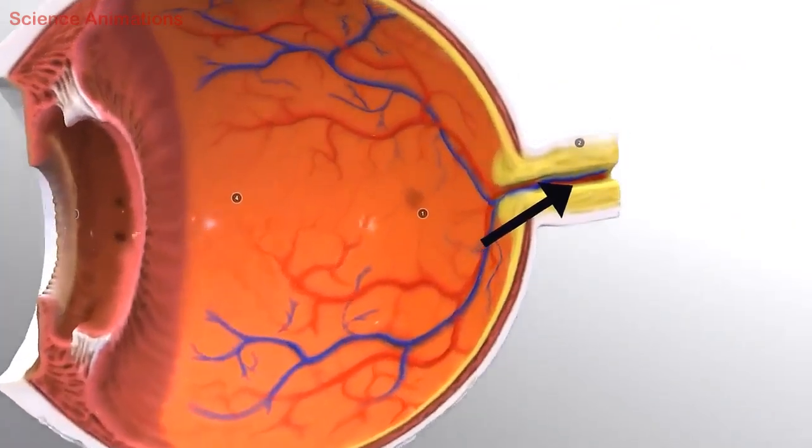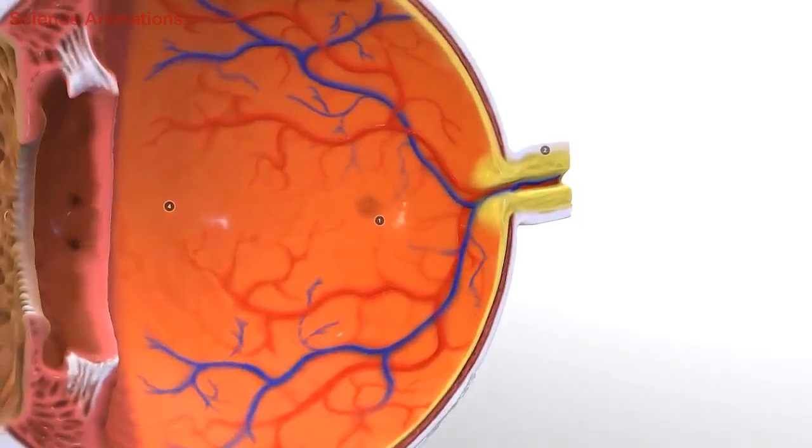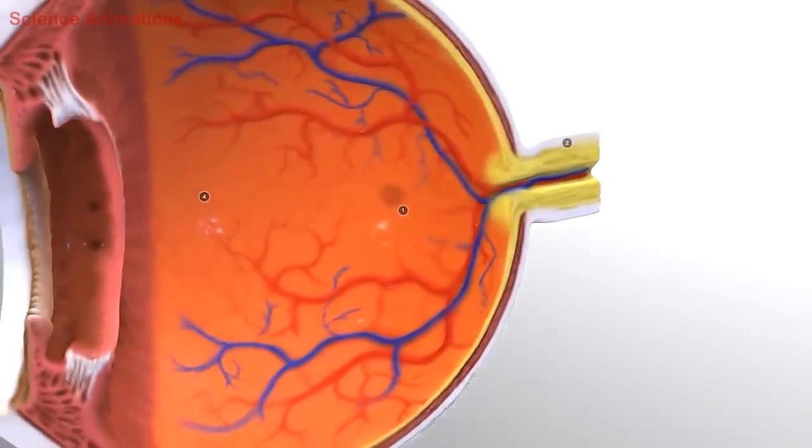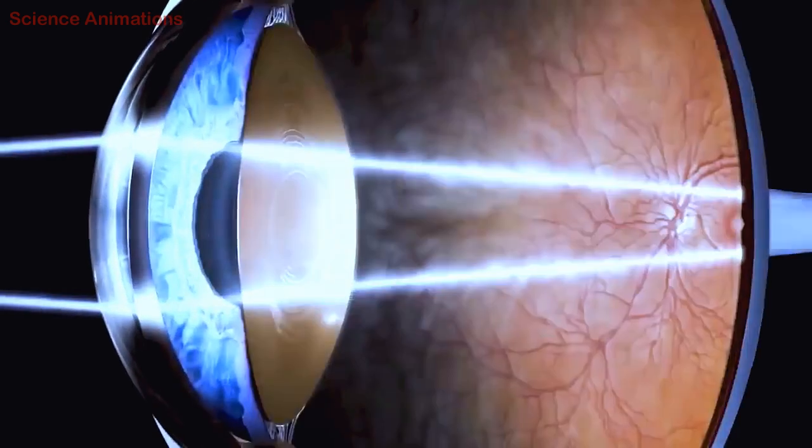In terms of blood supply, the eye receives oxygenated blood from the ciliary artery and central retinal artery, while deoxygenated blood is drained through several veins, including the central retinal vein.